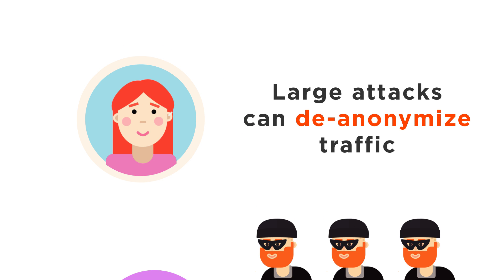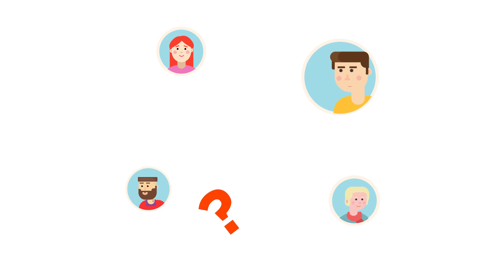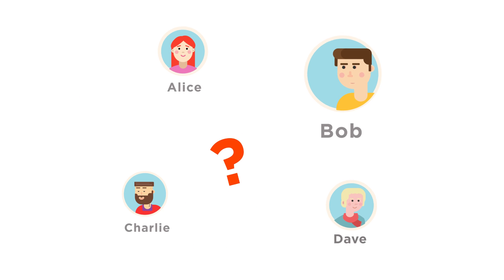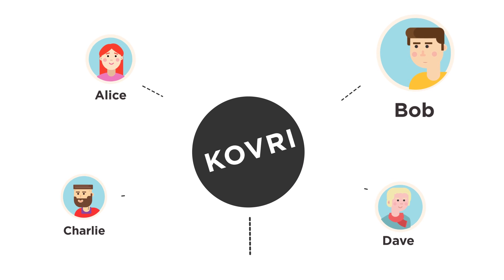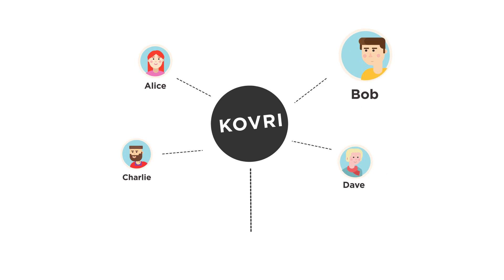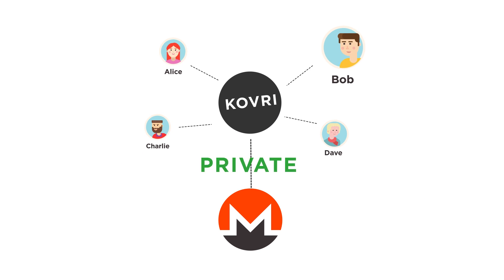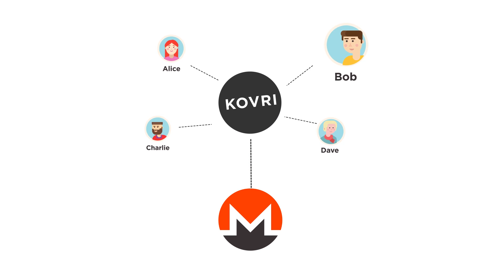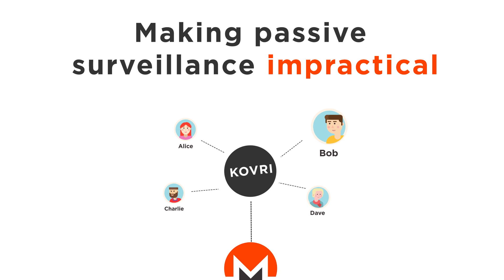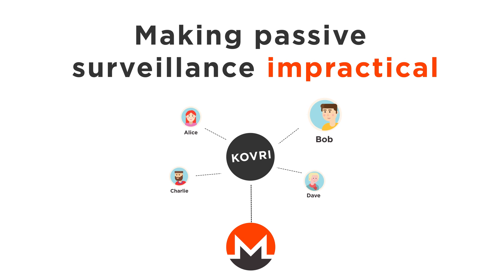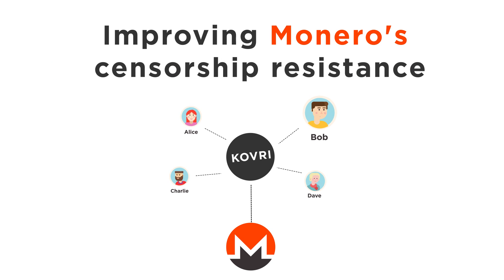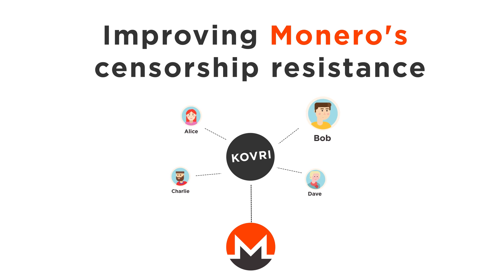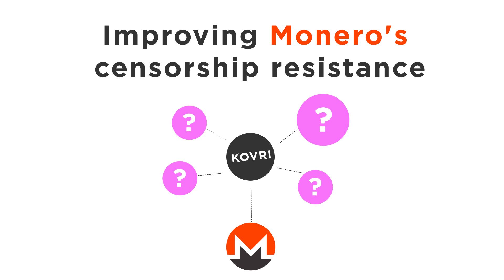So what can Alice, Bob, Charlie, and Dave do to mitigate these threats? They could use Kovri. If they exclusively use Kovri to connect to the Monero network, no one will know their IP address, making passive surveillance impractical, while substantially improving Monero's censorship resistance. As you can see, Kovri is a software that allows users to send transactions more privately than ever before.